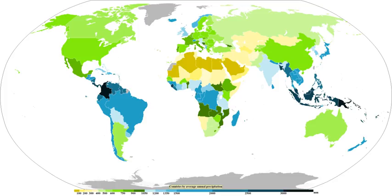Extratropical cyclones can bring cold and dangerous conditions with heavy rain and snow, with winds exceeding 119 km per hour, sometimes referred to as windstorms in Europe. The band of precipitation associated with their warm front is often extensive, forced by weak upward vertical motion of air over the frontal boundary which condenses as it cools and produces precipitation within an elongated band that is wide and stratiform, meaning falling out of nimbostratus clouds. When moist air tries to dislodge an Arctic air mass, overrunning snow can result within the poleward side of the elongated precipitation band. In the northern hemisphere, poleward is towards the north.